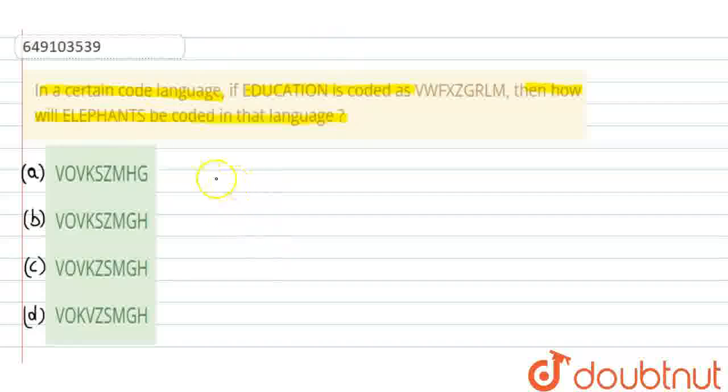What we have given is EDUCATION. Now, how to code this? That is V, W, then F, X, then Z, G, R, L, M.